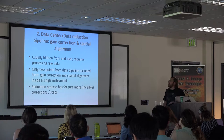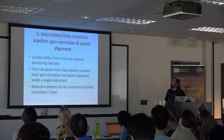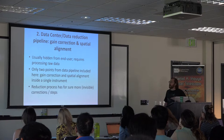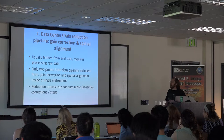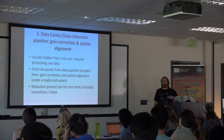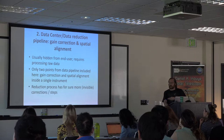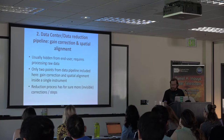The second thing, which is planned to be taken over by the data reduction pipeline, is the gain correction and the spatial alignment. That is expected to be hidden from the user because you have to process raw data to do this — it should be done before. The reduction process has a much larger number of steps that you are not going to see. In principle there is a lot of stuff still going on behind the scenes that you as the final user won't have to do yourself.